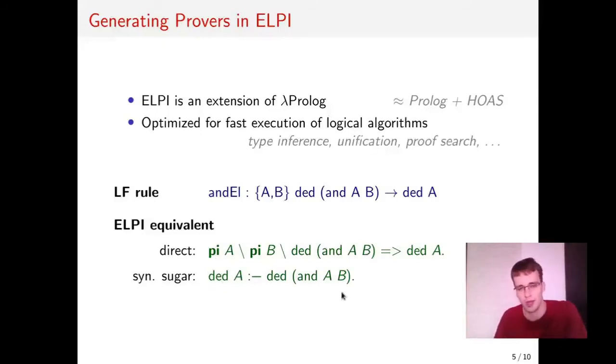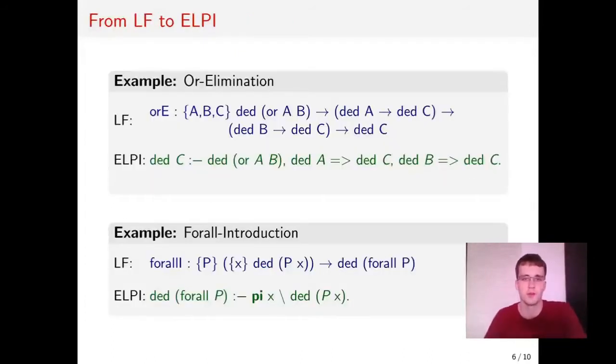In this case it's exactly like standard Prolog, so if we want to prove A we have to prove A and B, which is exactly what and-elimination tells us. We can do the same translation for other rules. So for example here I have forall-elimination and forall-introduction. This is very straightforward, nothing interesting is happening here.